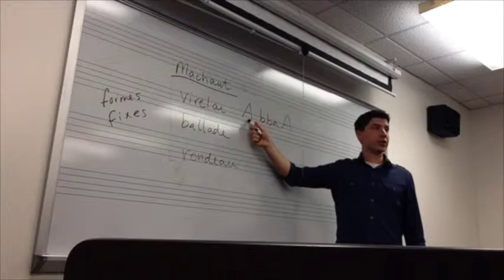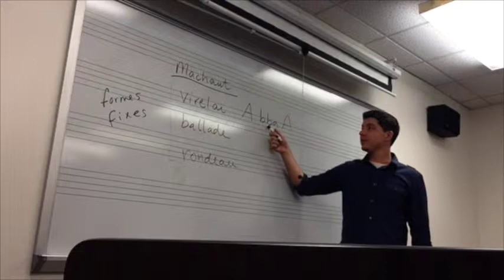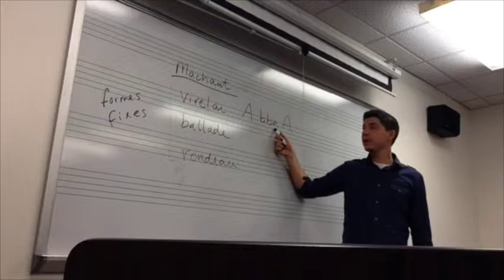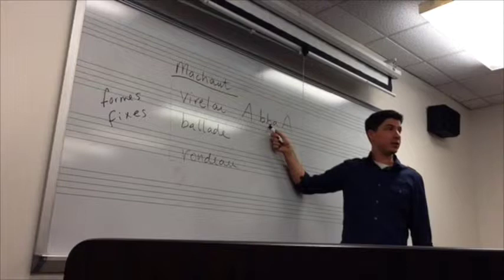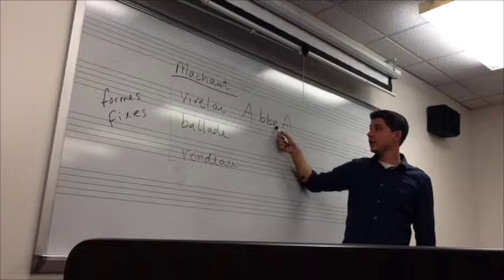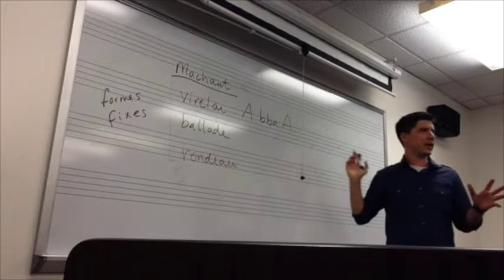So in the virelai form A B B A A: the A melody is the same in both A sections, but the text between them is different. The B sections share the same melody but have different text. The final A has the same melody as the first A and the same text. That's how the uppercase/lowercase convention works for reading these forms.